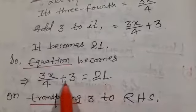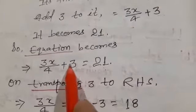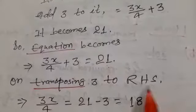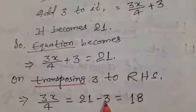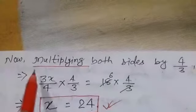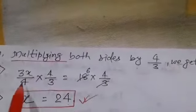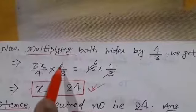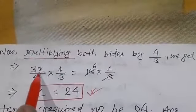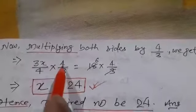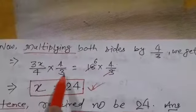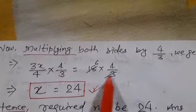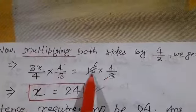Transposing 3 from LHS to RHS — since it is positive on the LHS it becomes negative on the RHS — we get 3x/4 = 21 − 3 = 18. Now multiplying both sides by 4/3: (3x/4) × (4/3) = 18 × (4/3). The 4s cancel and the 3s cancel, leaving x = 18 × 4/3 = 24. Hence the required number is 24.